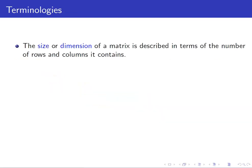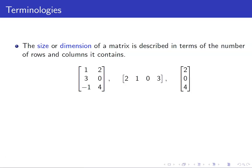The size or the dimension of a matrix is described in terms of the number of rows and columns it contains. For example, we have here these matrices. Let us determine the size or the dimension of these matrices. For the first matrix, we have three rows and two columns. So therefore, we say that the size of this matrix is three by two.